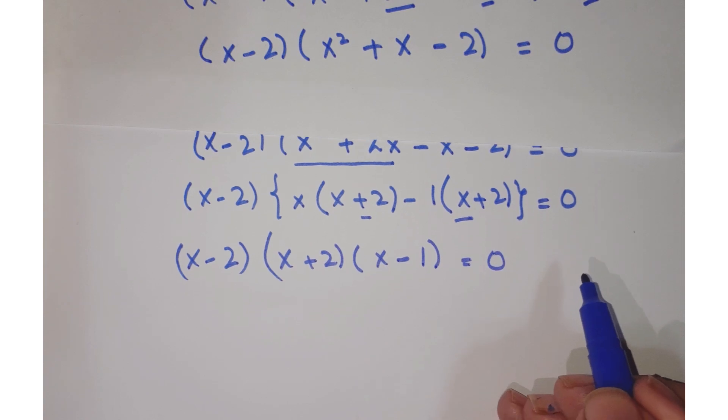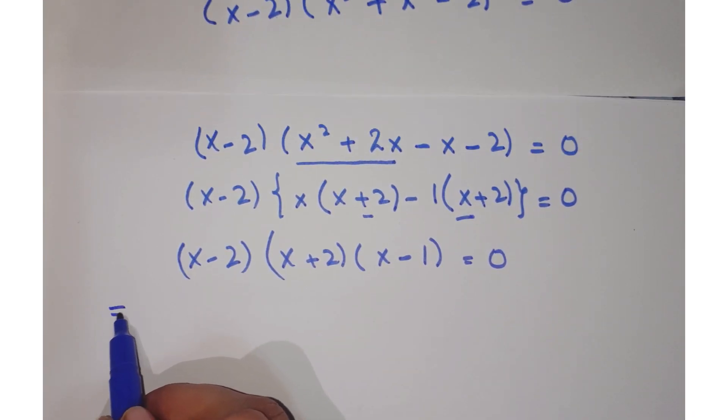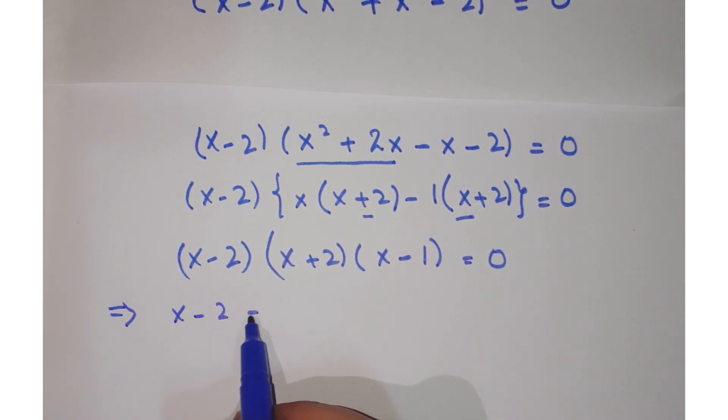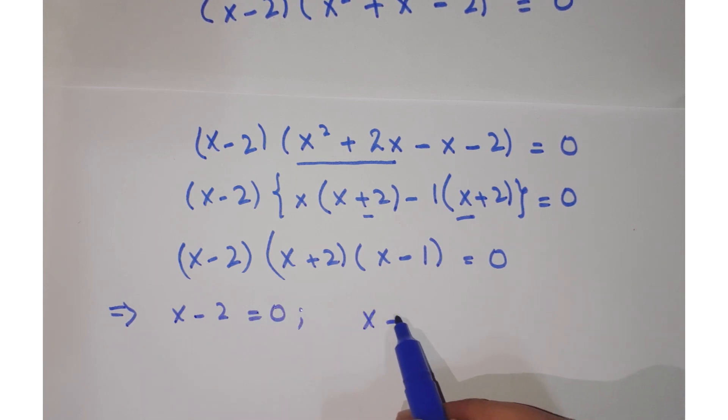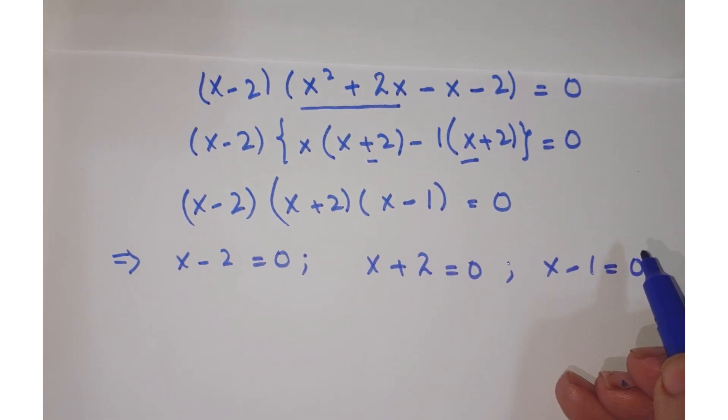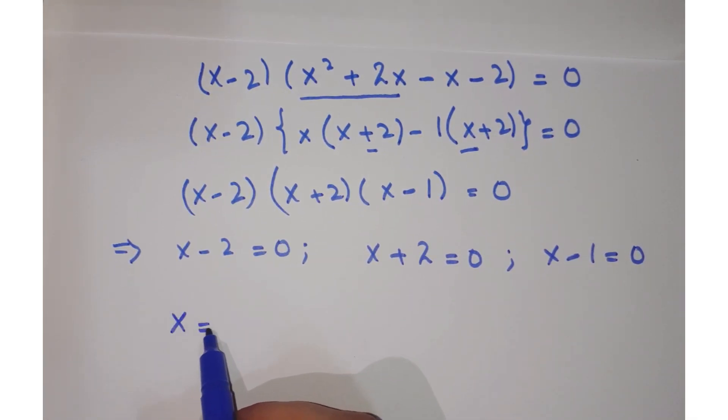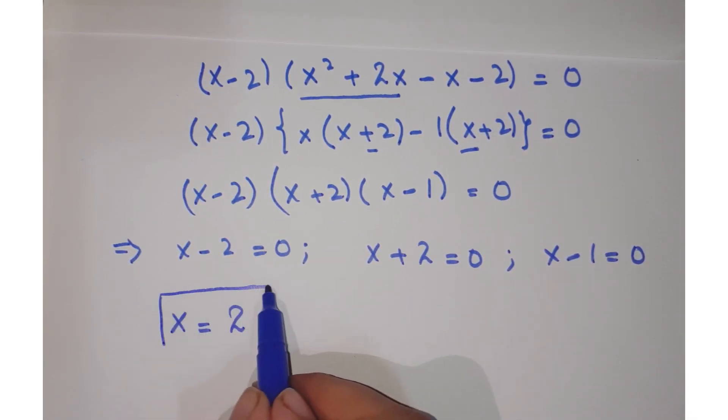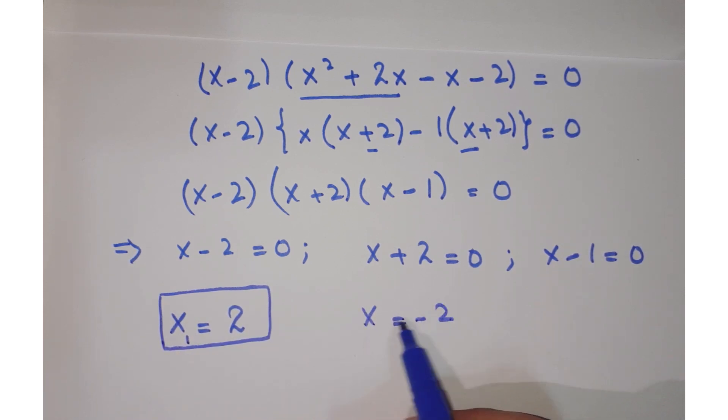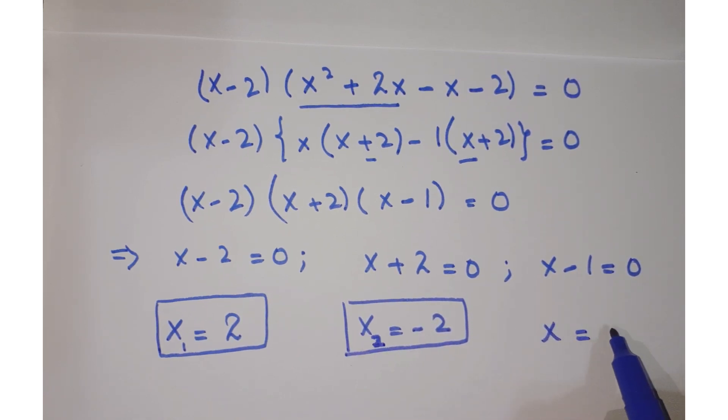So we have three possibilities: x-2=0, so x=2 (this is the first solution); x+2=0, so x=-2 (this is the second solution); and x-1=0, so x=1 (this is the third solution).